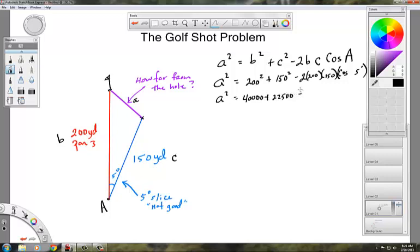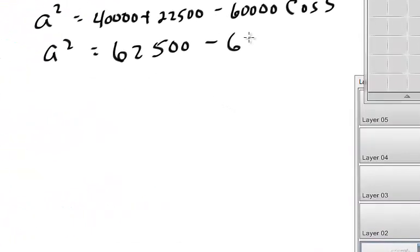Minus 2 times 200 times 150, that's 60,000. I'm sure you guys already have this because you're amazing students. So if we put this together, that's going to be 62,500 minus 60,000 times the cosine of 5. Let's just do that right now.